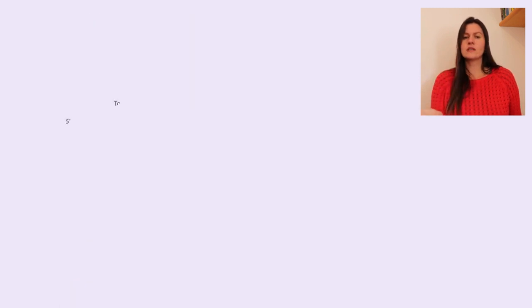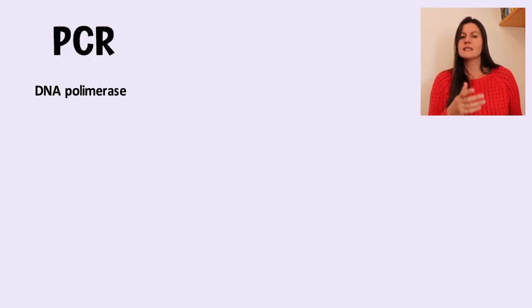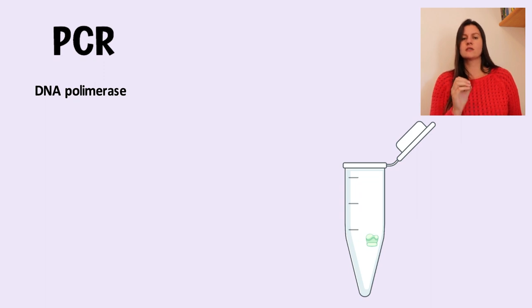Para conseguir fazer isso fora da célula, a DNA polimerase precisa de condições químicas e físicas adequadas, pois lembrem que na célula o processo de replicação envolve várias outras enzimas que não serão adicionadas no tubo.